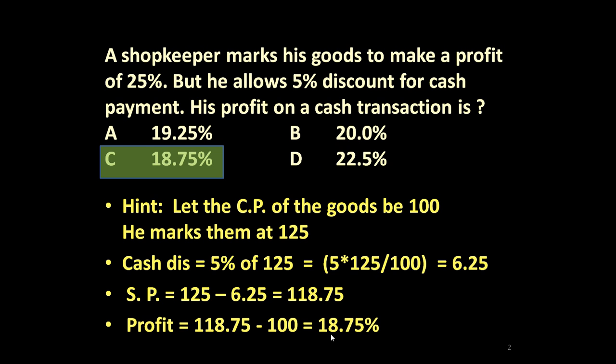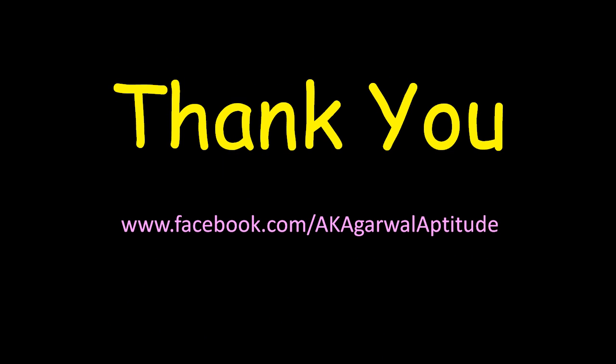His net profit on the cash transaction is rupees 118.75 minus the cost price of rupees 100, which equals 18.75%. So the answer is 18.75%. Similarly, you can solve many such types of problems. Thank you very much, friends, for watching this video. You can also follow me on Facebook.